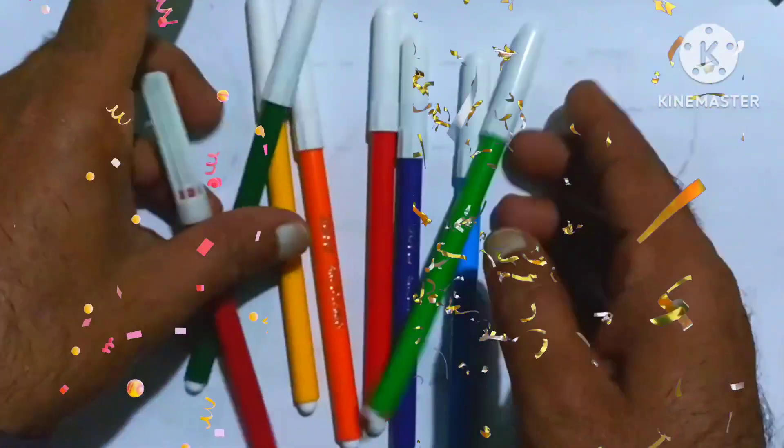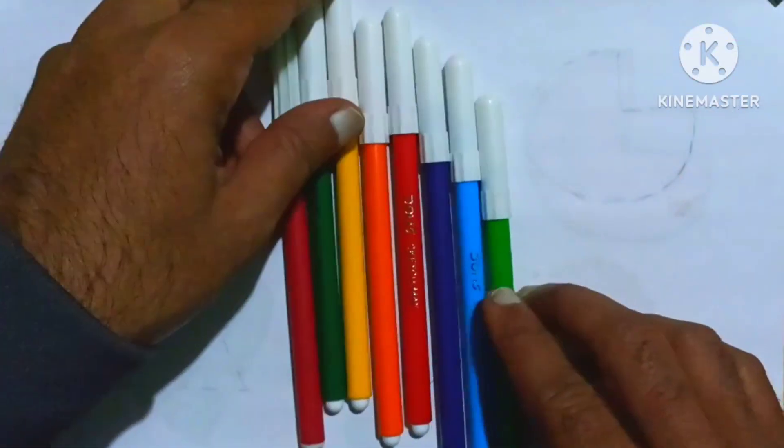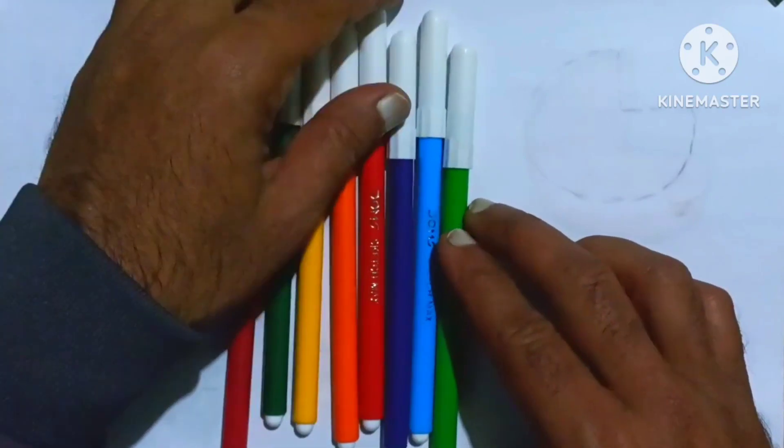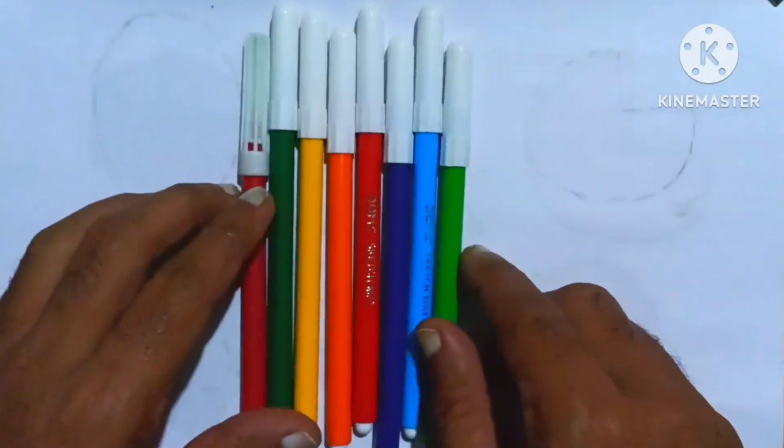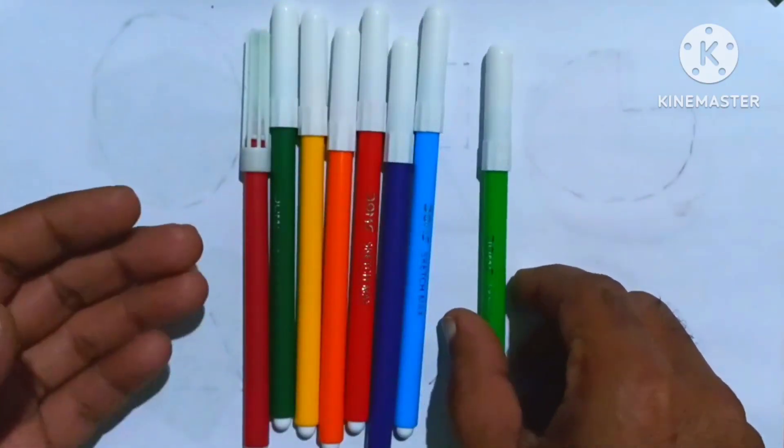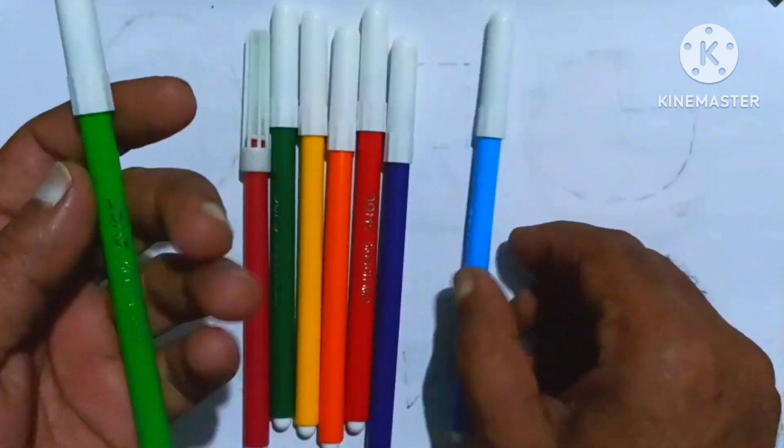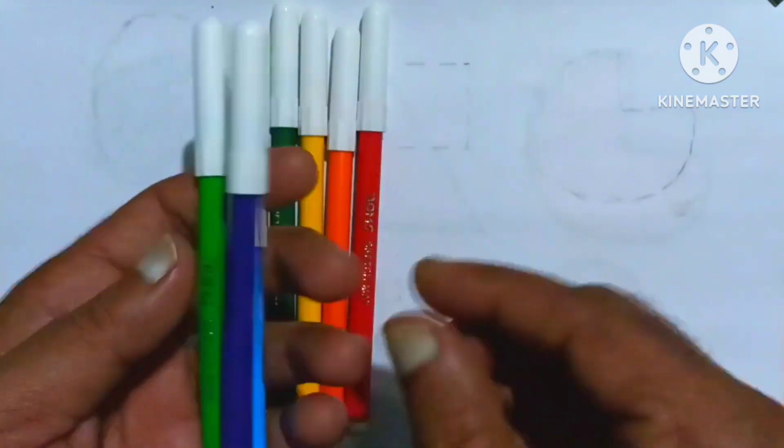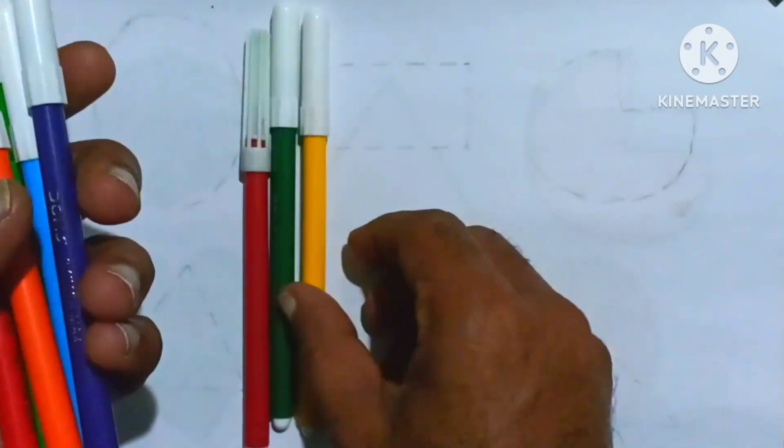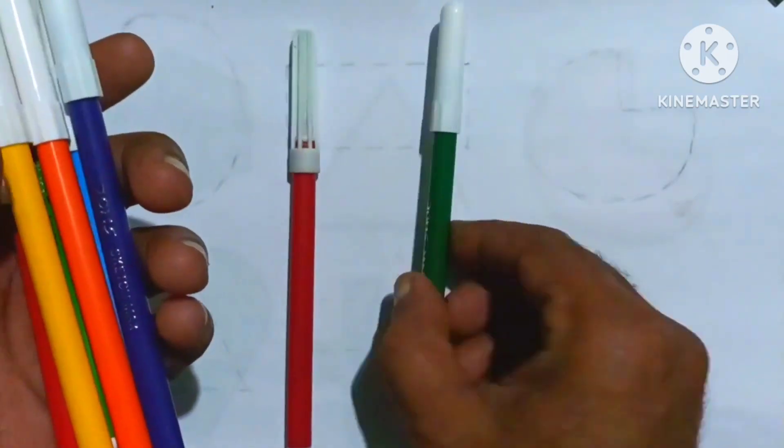Hello kids, welcome back to my video. Today we draw some 2D shapes and learn some colors. So first we learn some colors. Look at these colors: green color, sky blue color, purple color, red color, orange color, yellow color.